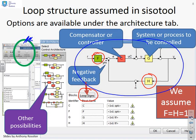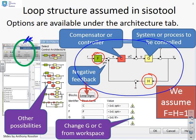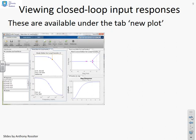If you want to change G or C and bring in values saved in the workspace, clicking the green arrows allows you to import a transfer function from the workspace into a given position in the block diagram.